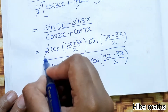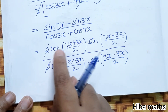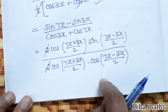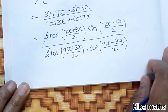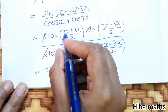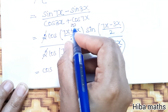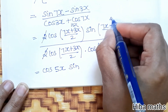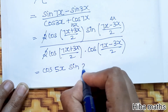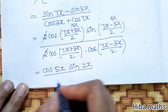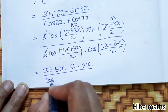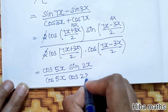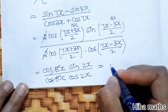In the next step, 2 and 2 cancel. We get cos((7x plus 3x)/2) which is cos(10x/2) equals cos 5x, and sin((7x minus 3x)/2) which is sin(4x/2) equals sin 2x. The denominator has cos((10x)/2) equals cos 5x, and cos((4x)/2) equals cos 2x. Cos 5x and cos 5x cancel.